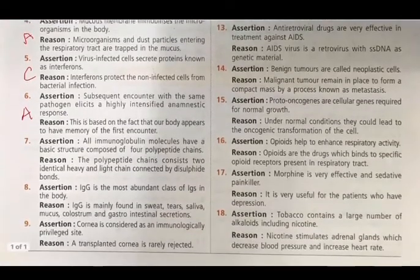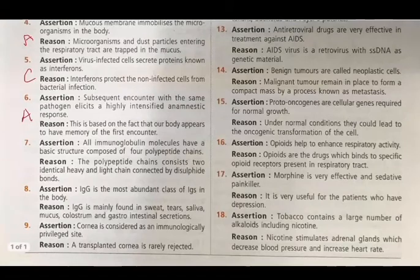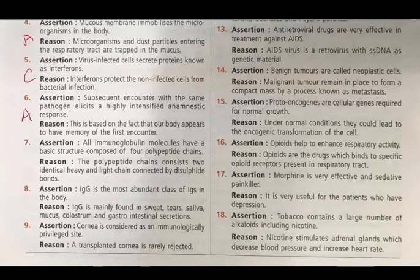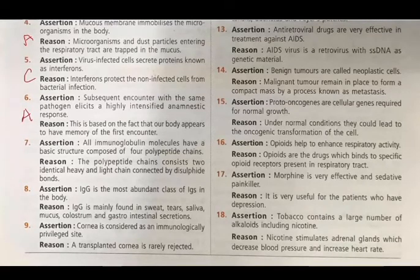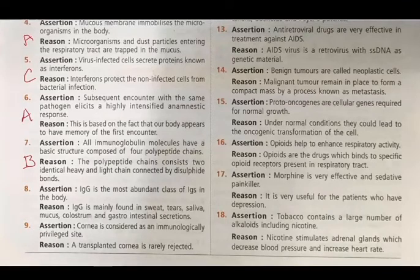Question 7 - Assertion: All immunoglobulin molecules have a basic structure composed of four polypeptide chains. Reason: The polypeptide chains consist of two identical heavy and light chains connected by disulfide bonds. Both are true, but the reason has no direct link explaining the assertion. Answer: B.